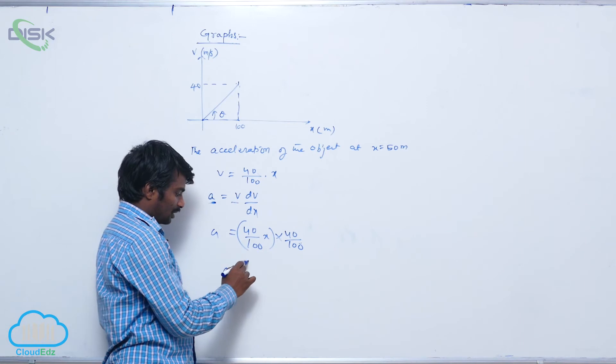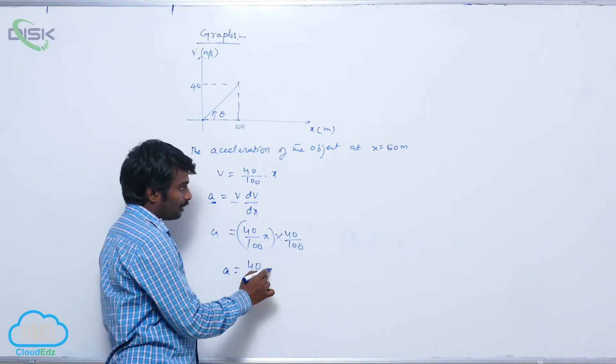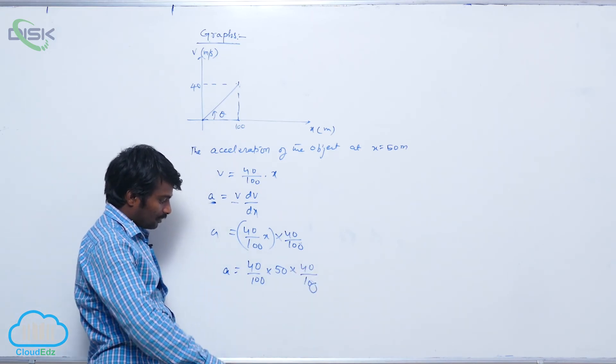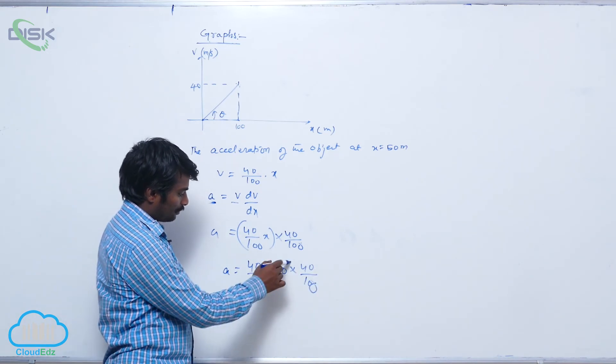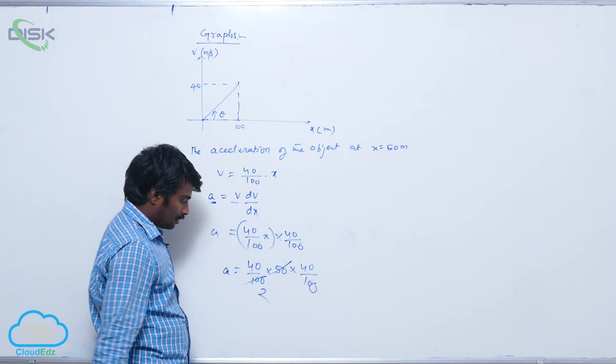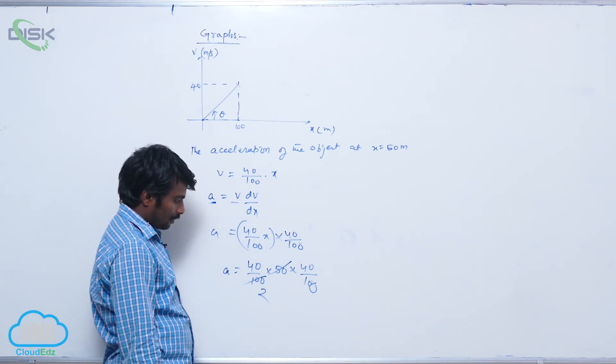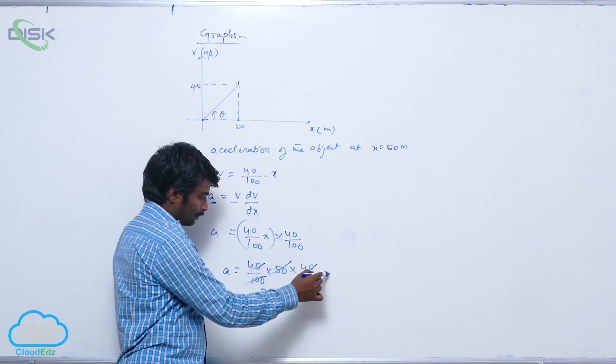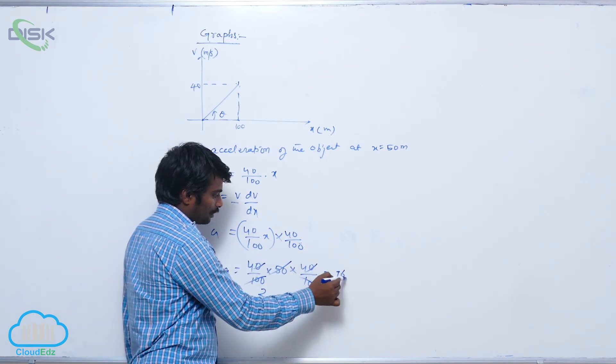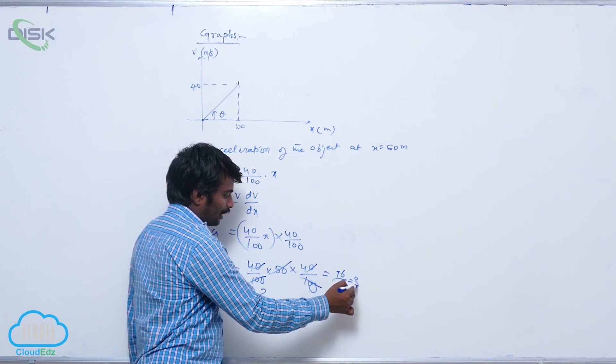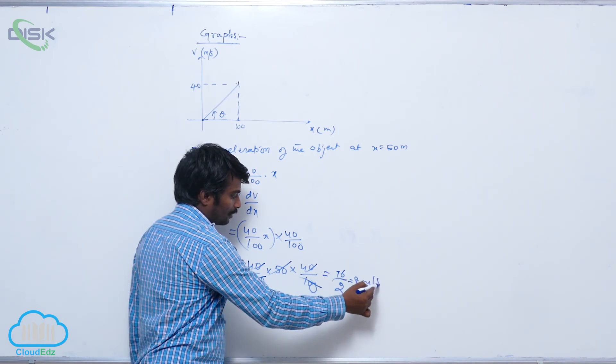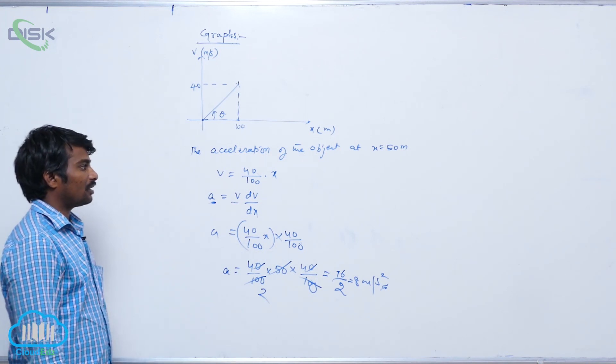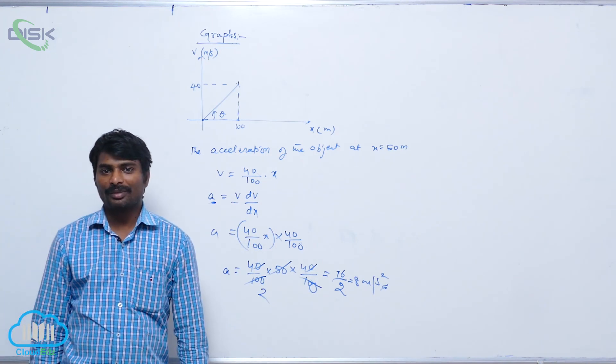Substitute x value directly: 40 by 100 into 50 into 40 by 100. What you are going to get is 16 by 2, which equals 8 meters per second squared. This is the acceleration when the object is at x equals 50 meters.